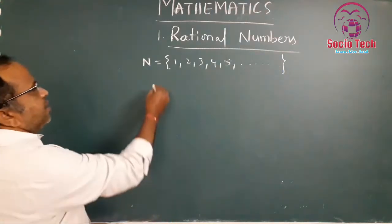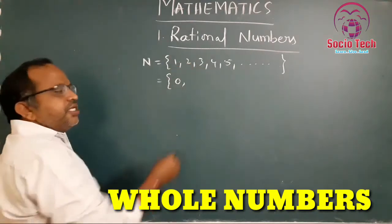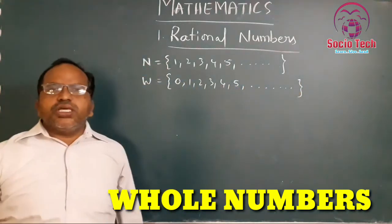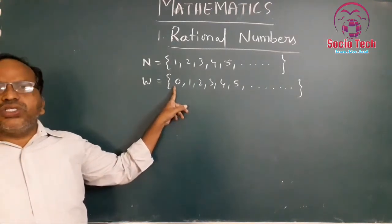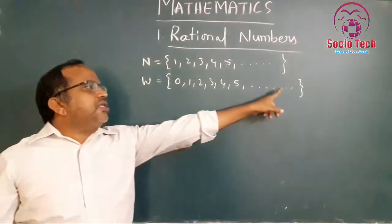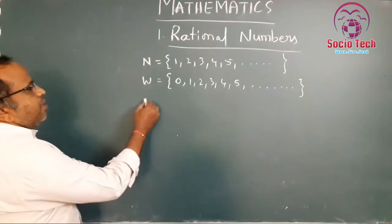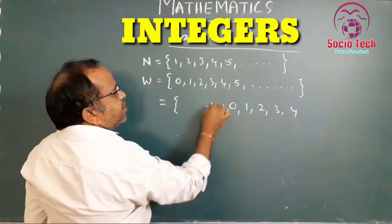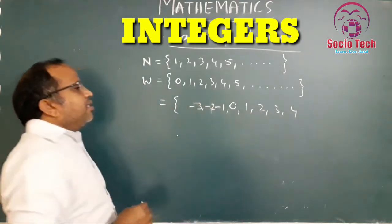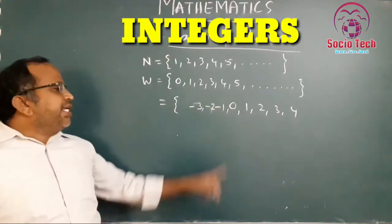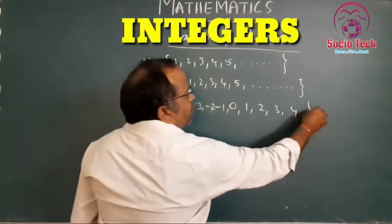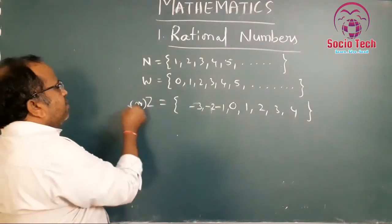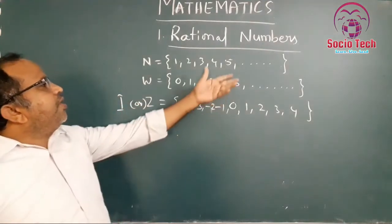When we add 0 to the natural number set, it becomes the whole number set. The least whole number is 0, and there is no largest whole number. By adding negative numbers to this whole number set, it becomes the integer set. Integers are denoted by Z or I.